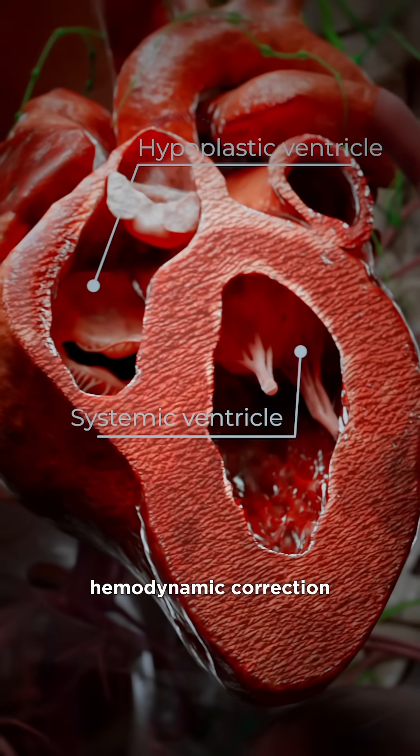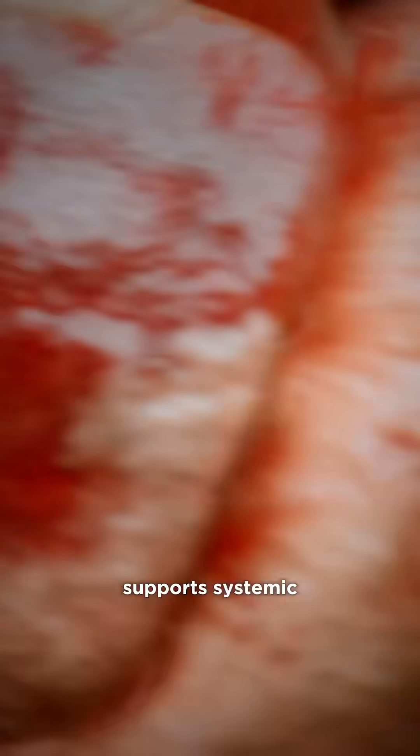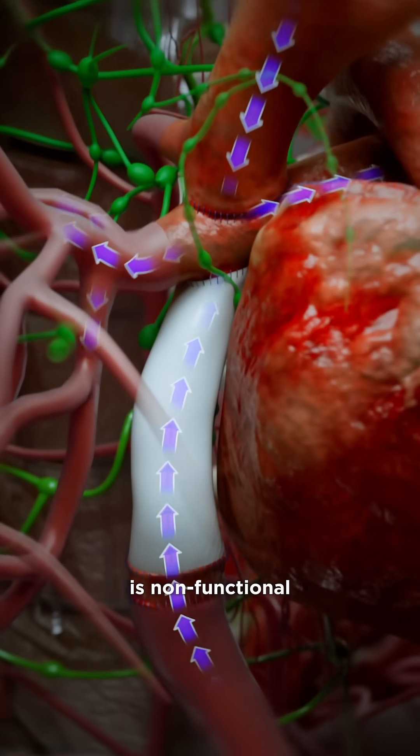Following this hemodynamic correction, the systemic ventricle supports systemic circulation, while the hypoplastic ventricle is non-functional.